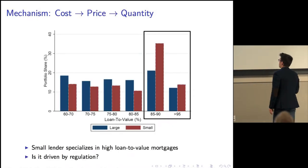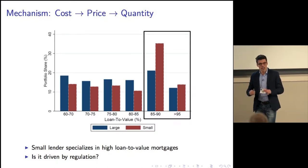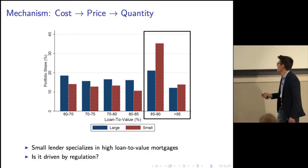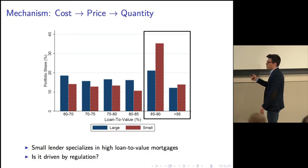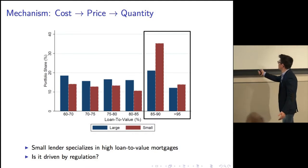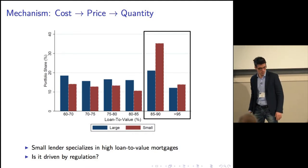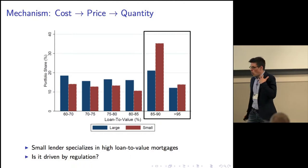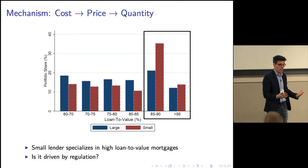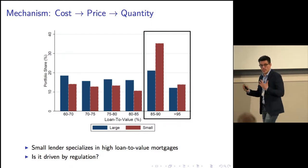The last step of this simple mechanism: is this difference in price reflected in quantities? What I show is the portfolio share of large and small banks across the loan-to-value distribution. Not surprisingly, the large bank is fairly balanced and diversified, whereas the small banks really tilt their business toward high-risk lending. Of course the quick answer is that this is not driven only by regulation — there are many other factors — and that's why we have a model in order to try to disentangle them.